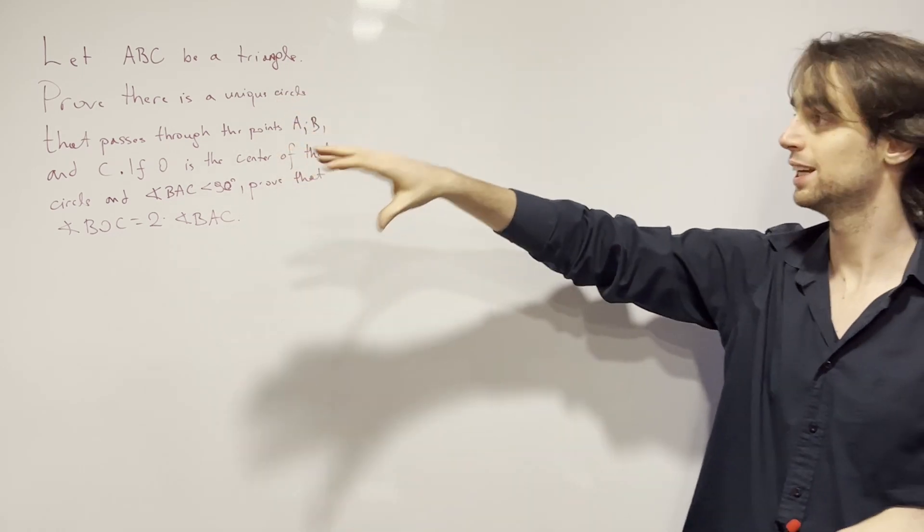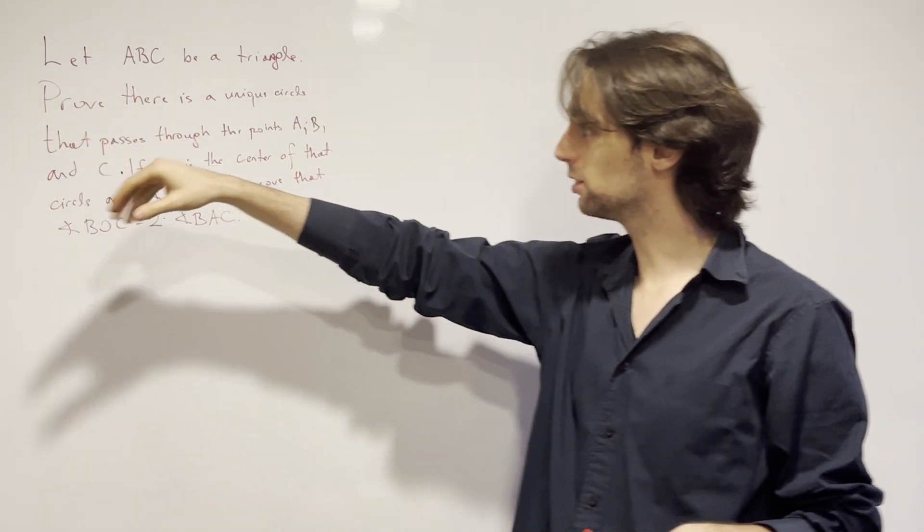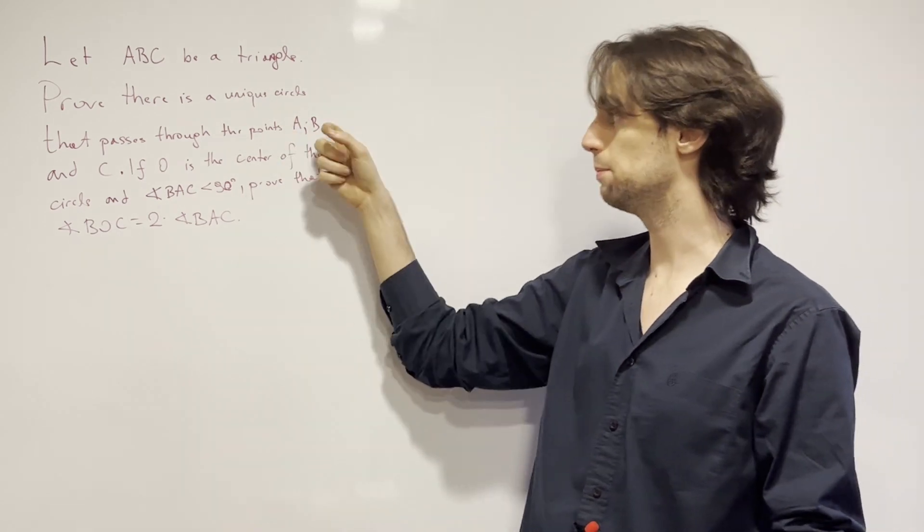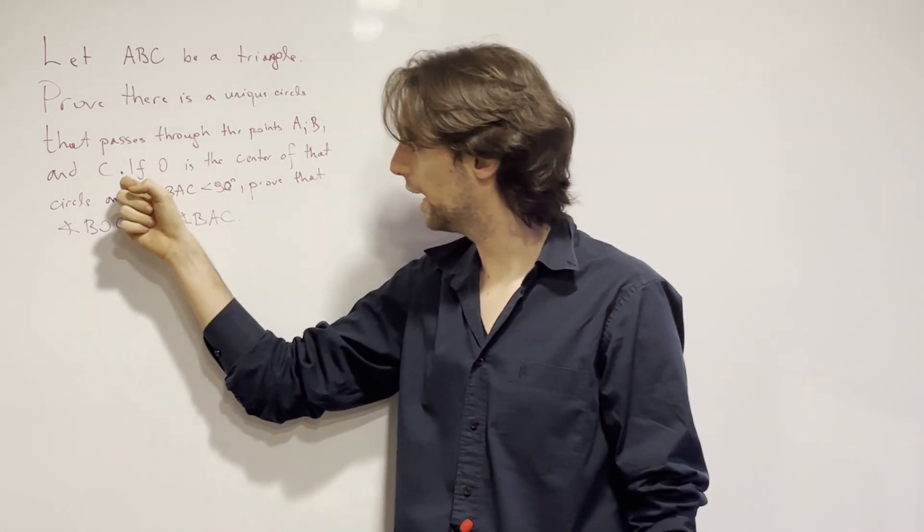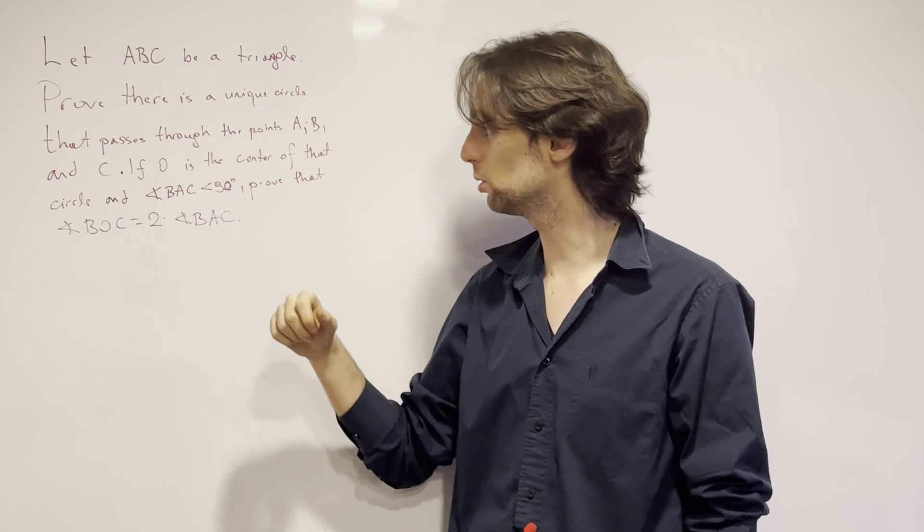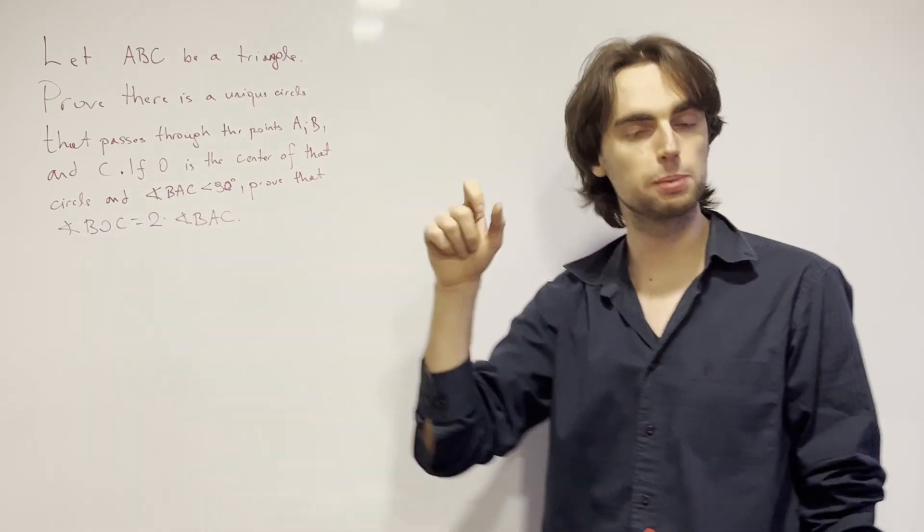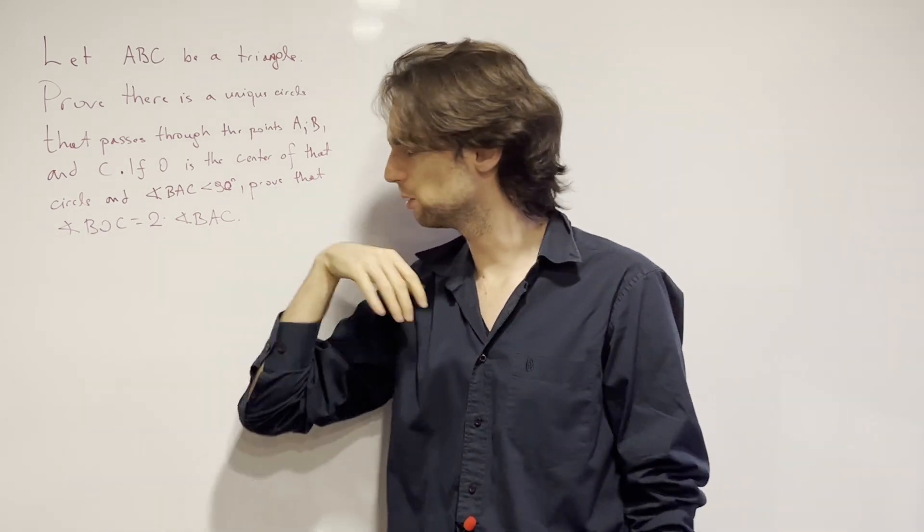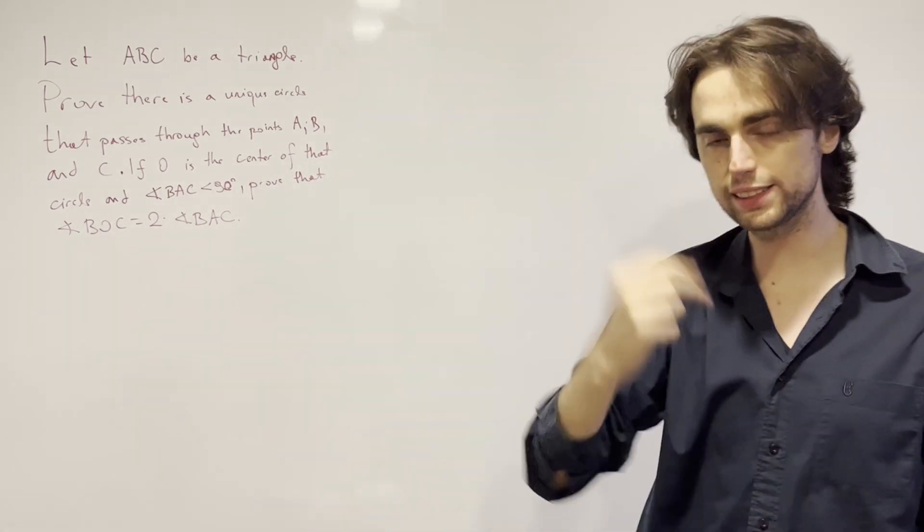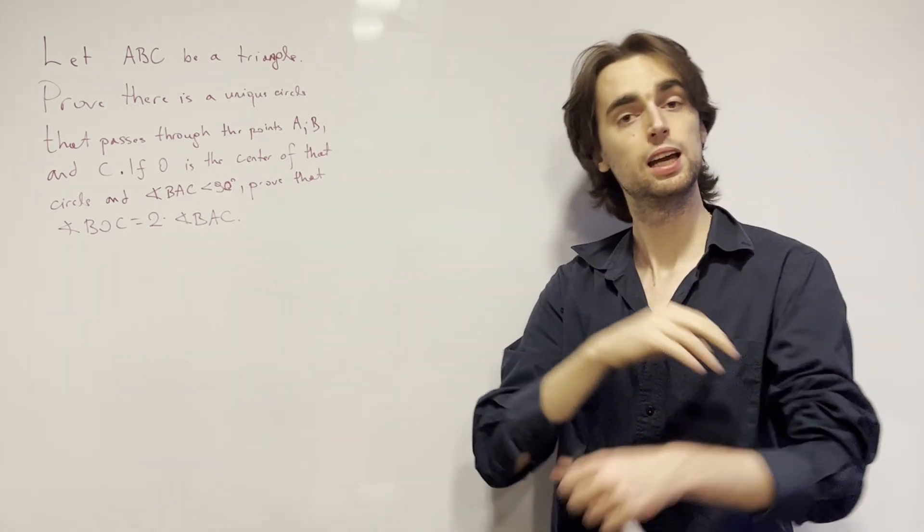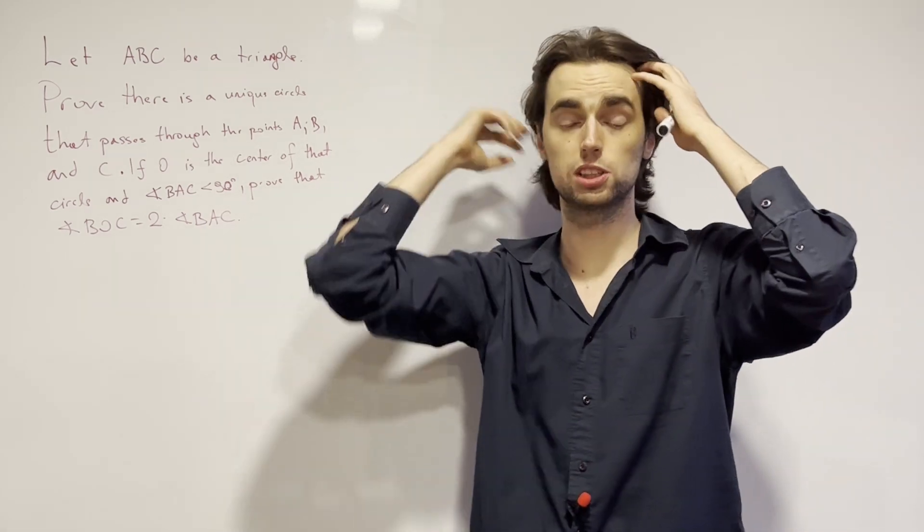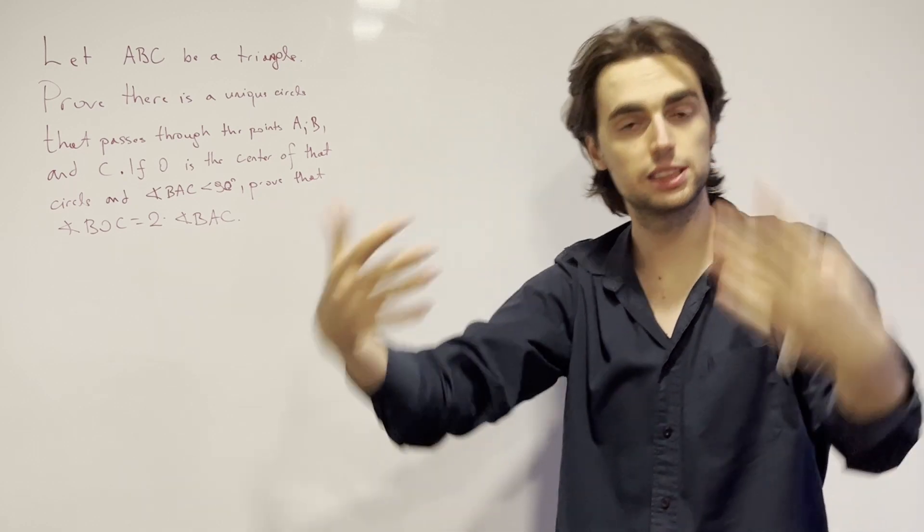So the first problem is, let ABC be a triangle. Prove that there is a unique circle that passes through points A, B, and C. And if O is the center of that circle, and we have that the angle BAC is less than 90, we're going to prove that the angle BOC is twice the angle BAC. And with that we're going to talk about some properties of points on a circle which we call concyclic points.